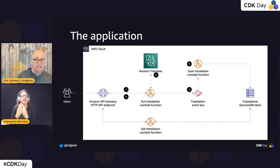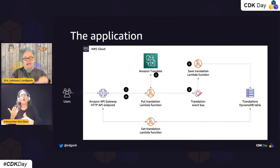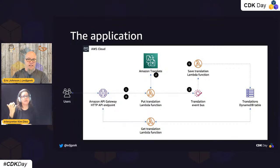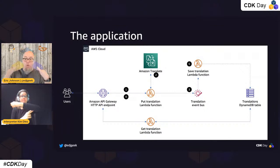It then comes back, pushes those translations onto an EventBridge event bus, and returns the translations to the user synchronously. But we're also doing asynchronous work — by putting events on the bus, it invokes another Lambda function which puts those translations into DynamoDB as separate records. I used EventBridge because I may want to do more than just translate — like turn translations into audio recordings or do sentiment analysis.